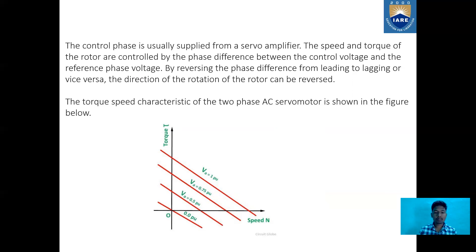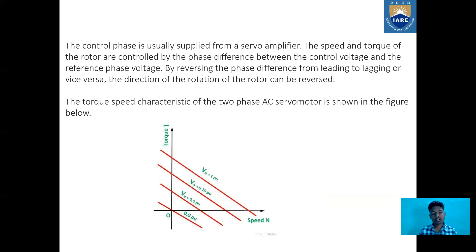From the graph we can see that on the x-axis we have taken speed and on the y-axis we have taken torque. The values shown are: Va equal to 1 pu, Va equal to 0.7 pu, and Va equal to 0.0 pu.